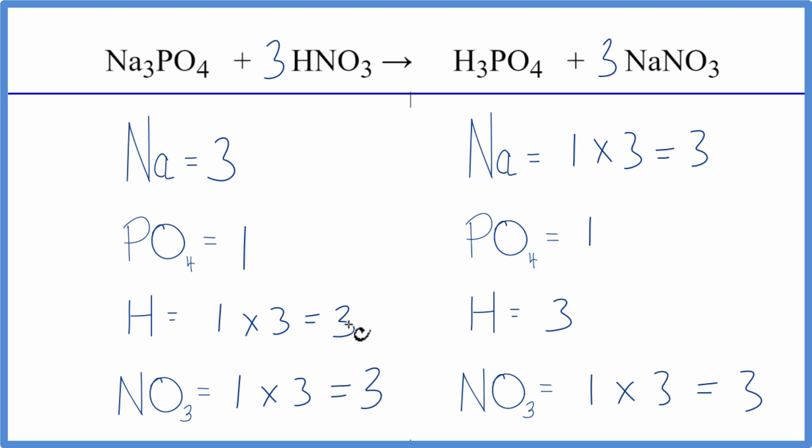This equation is balanced. So again, you'll get the same answer either way if you count these up individually or if you consider them as one item. But this way with double displacement reactions, especially with polyatomic ions, makes it a lot easier.